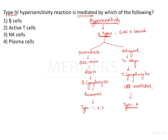Our question is about type 4 hypersensitivity. Option 1 says B cells. B cells are components of humoral immunity and therefore are involved in immediate type of hypersensitivity, which could be either type 1, type 2, or type 3, but not type 4. Therefore we can eliminate option 1.